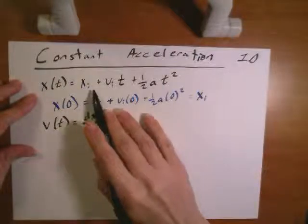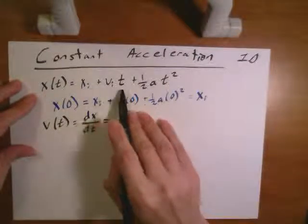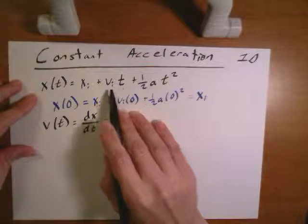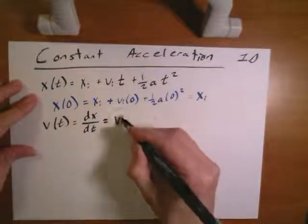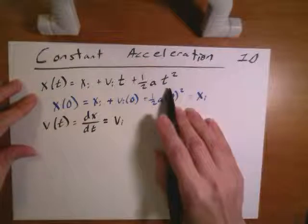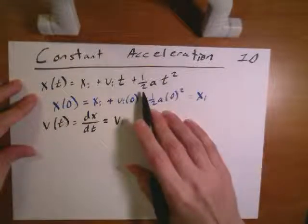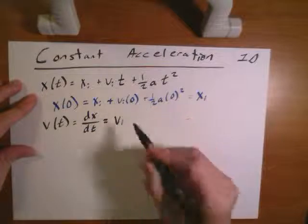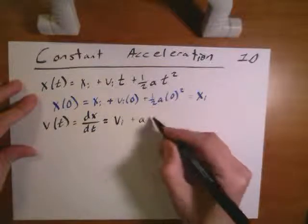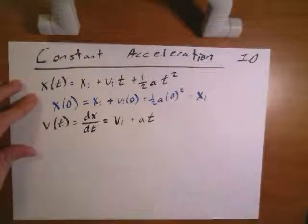First term's a constant, so that's going to go away. We then have a first order of time, and so that gives us just the value out front, vi. We've got a second order term for time. The square is going to come down, multiply by the one-half, canceling that factor out, leaving us with a, and the t squared becomes a t.